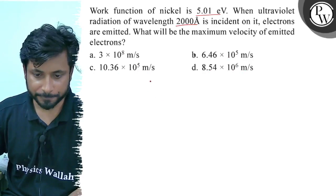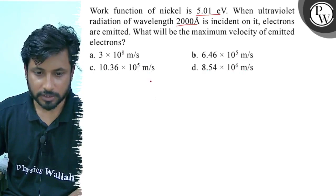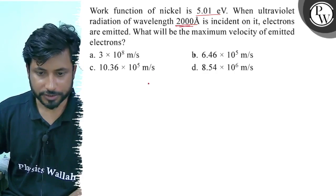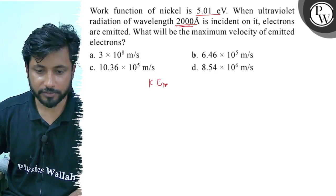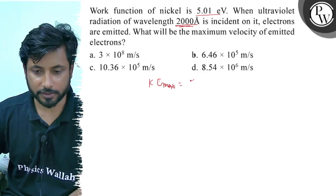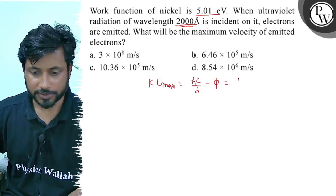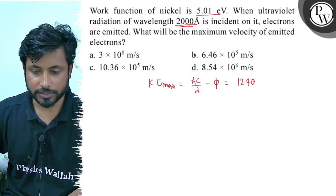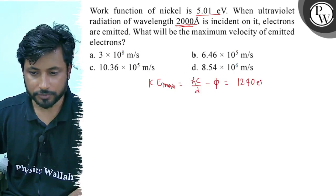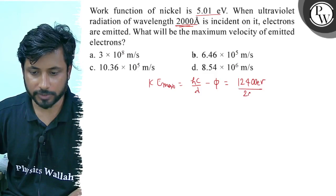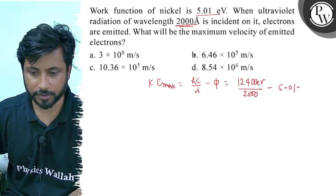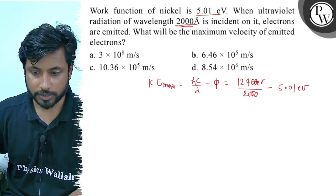Work function of nickel is 5.01 electron volt. Radiation wavelength is 2000 angstrom incident. So, kinetic energy maximum equals Hc by lambda minus phi. Phi is work function. Hc value is 12,400 electron volt angstrom divided by 2000 angstrom minus phi work function 5.01 electron volt. So this will calculate here.